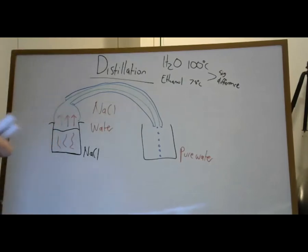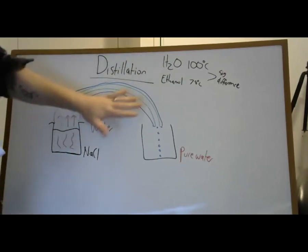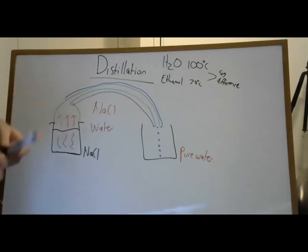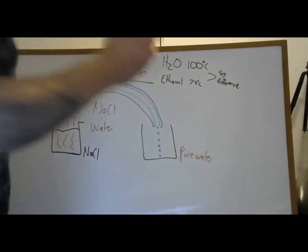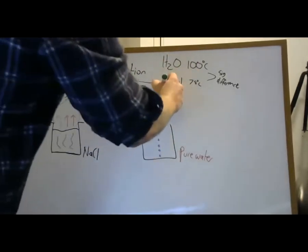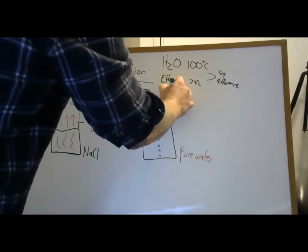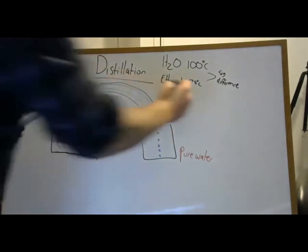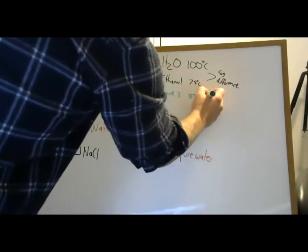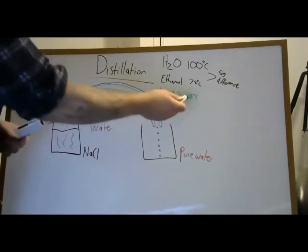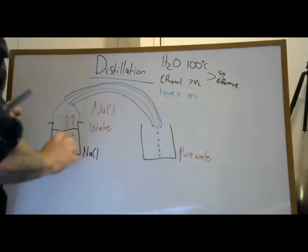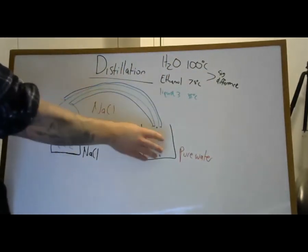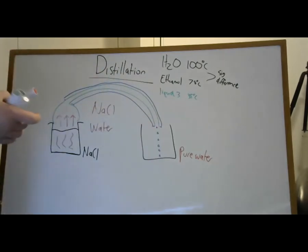So when something is dissolved in something else, we can often use distillation — it's the simplest way. It doesn't work if there's not a significant difference in boiling points between the two things. If we had water, ethanol, and some other liquid with a boiling point of 35 degrees, we would first heat to 35 degrees and catch all of that vapor, then heat to 78 degrees to catch the ethanol.